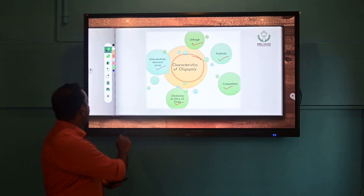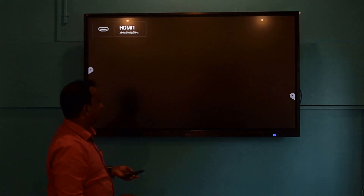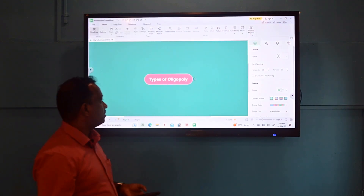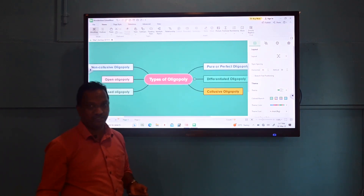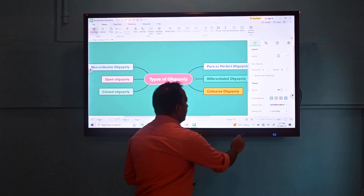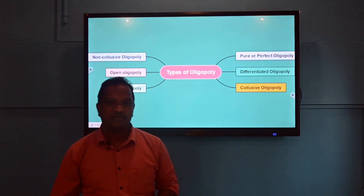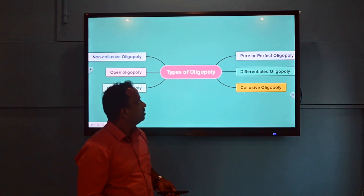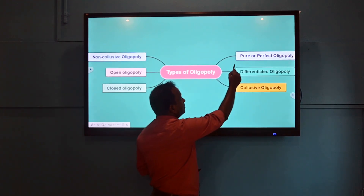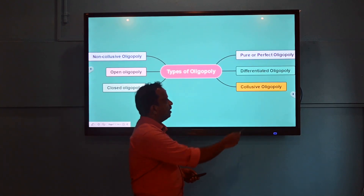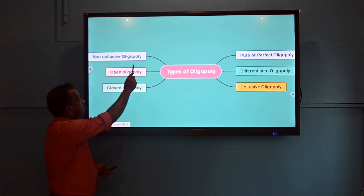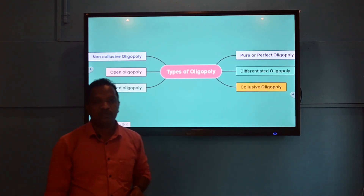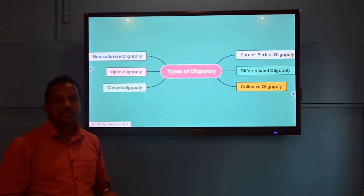What are the different types of oligopoly? We classify oligopoly based on its characteristics into: pure or perfect oligopoly, differentiated oligopoly, collusive oligopoly, non-collusive oligopoly, open oligopoly, and closed oligopoly. These are the different types of oligopoly visible in an economy.